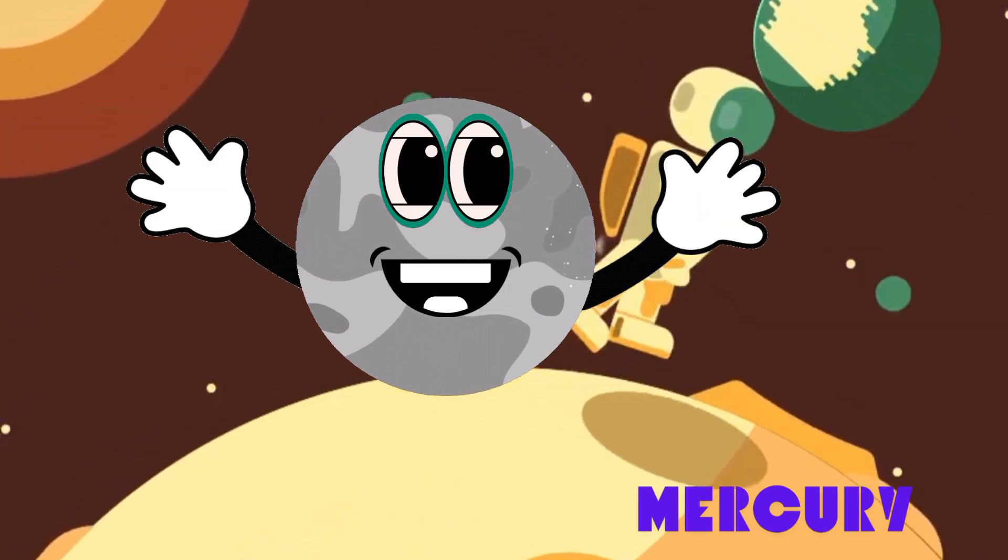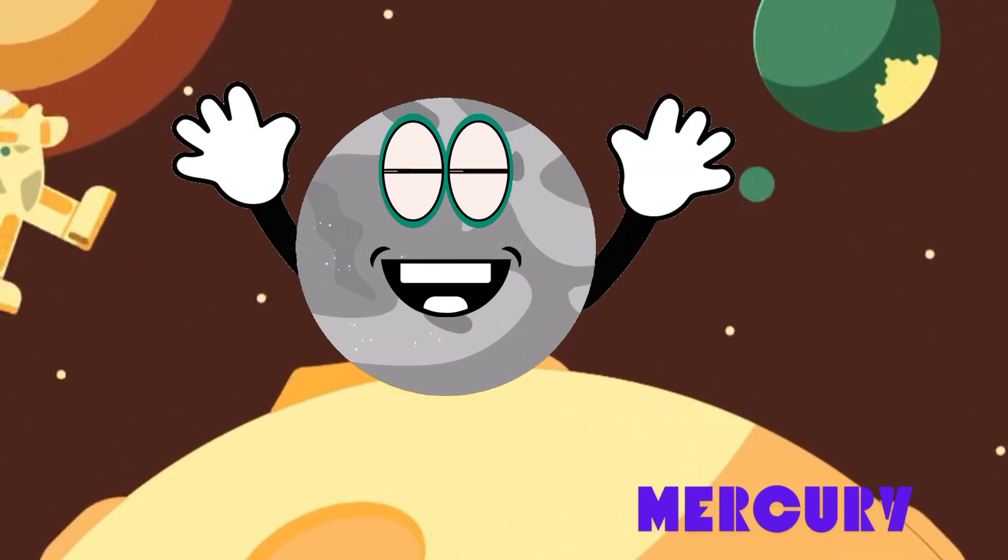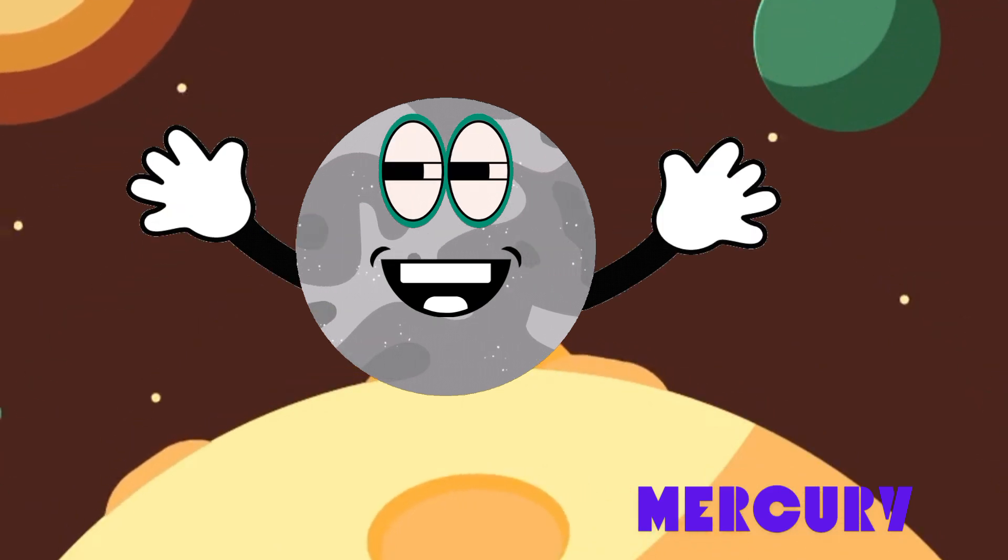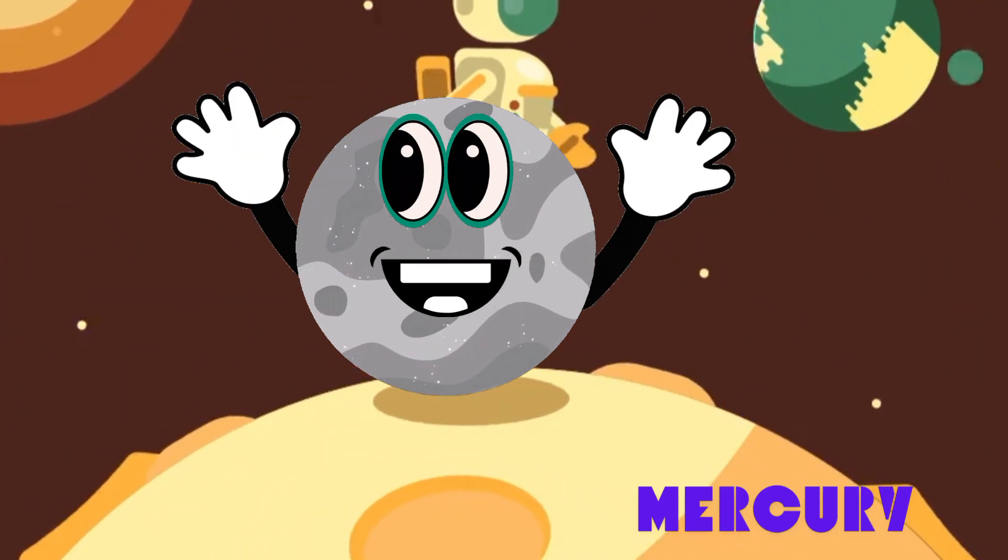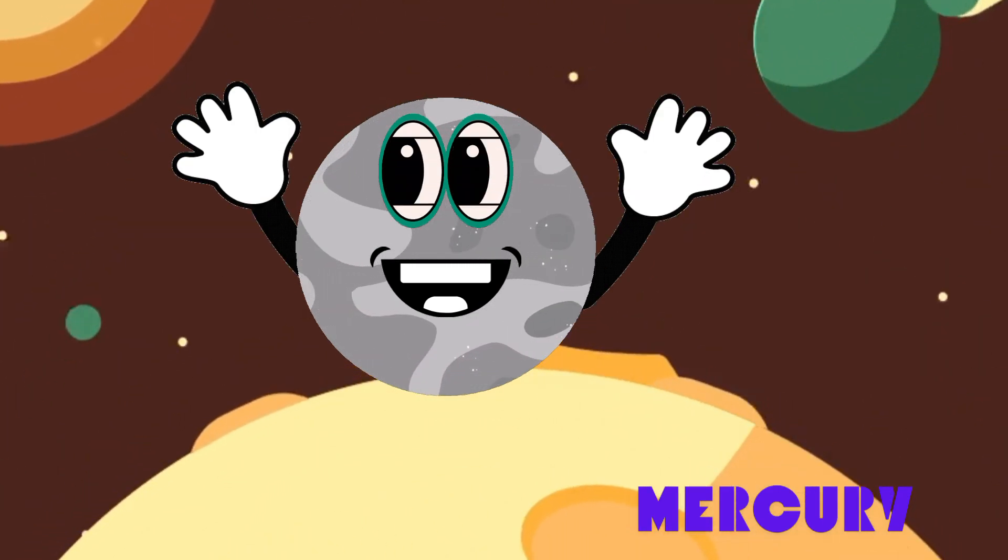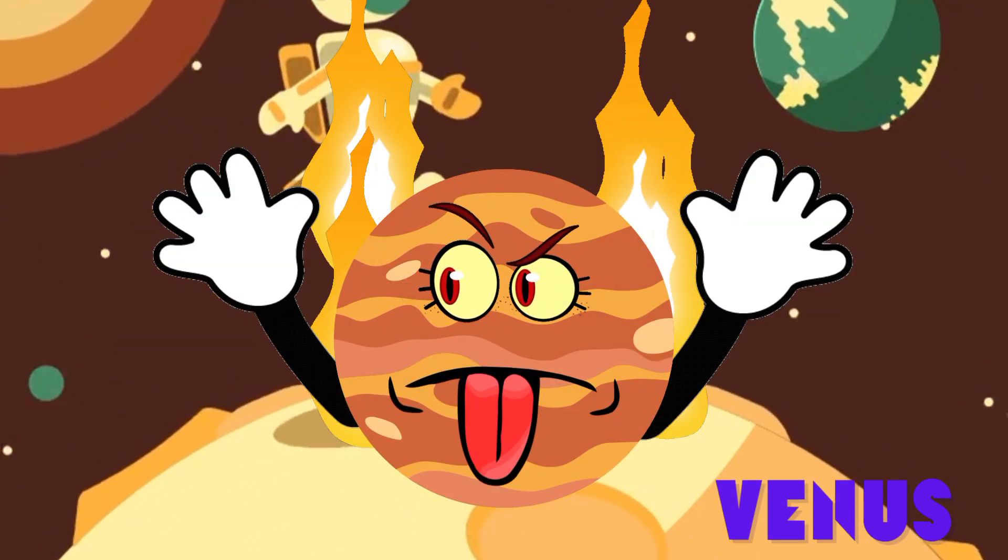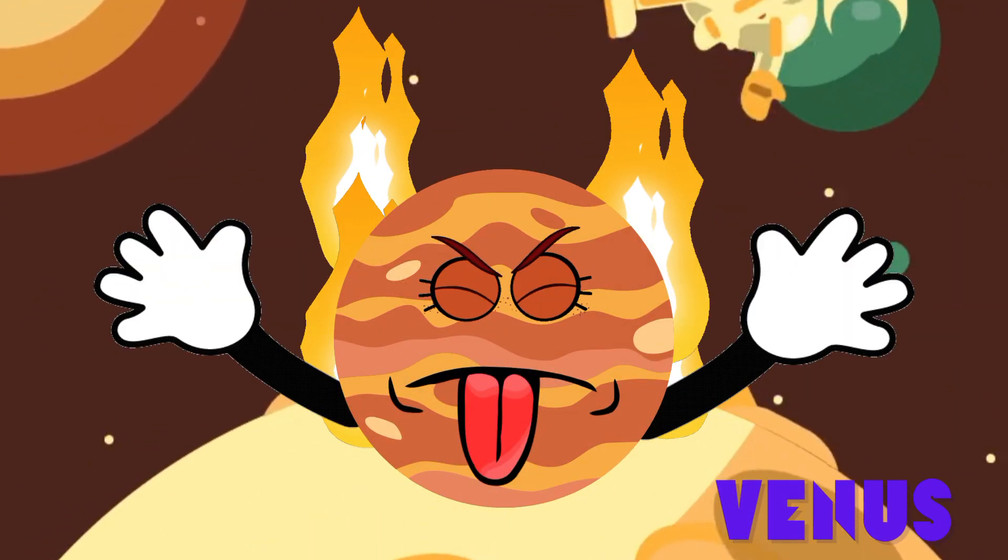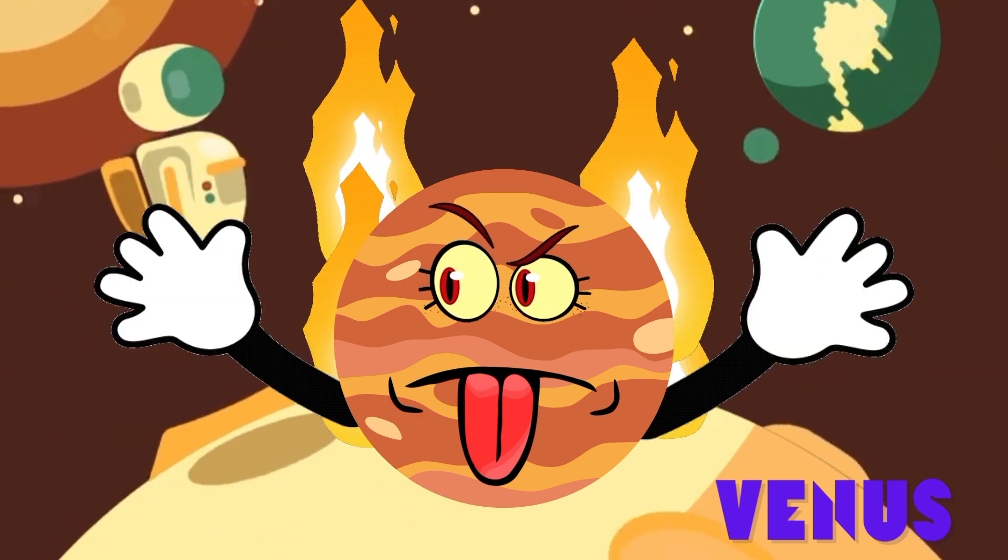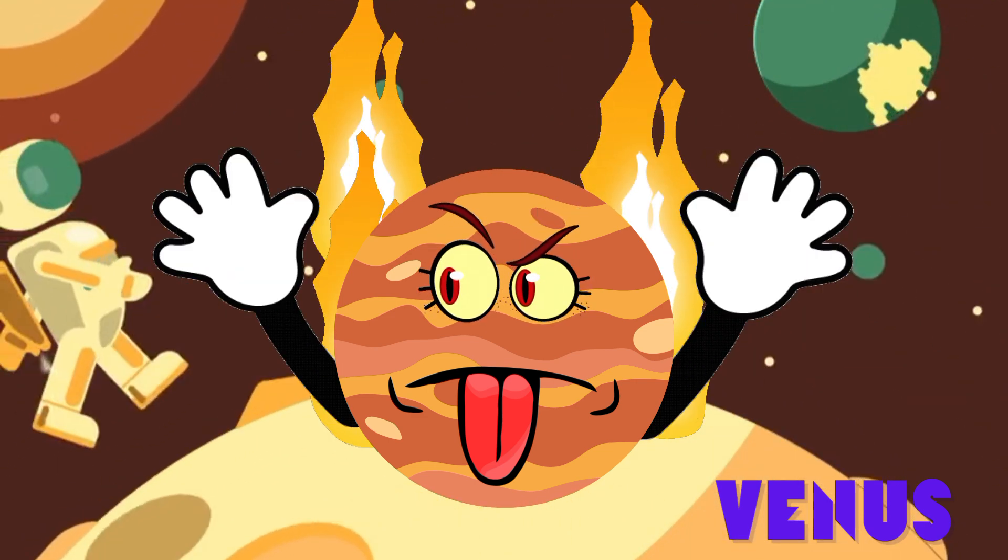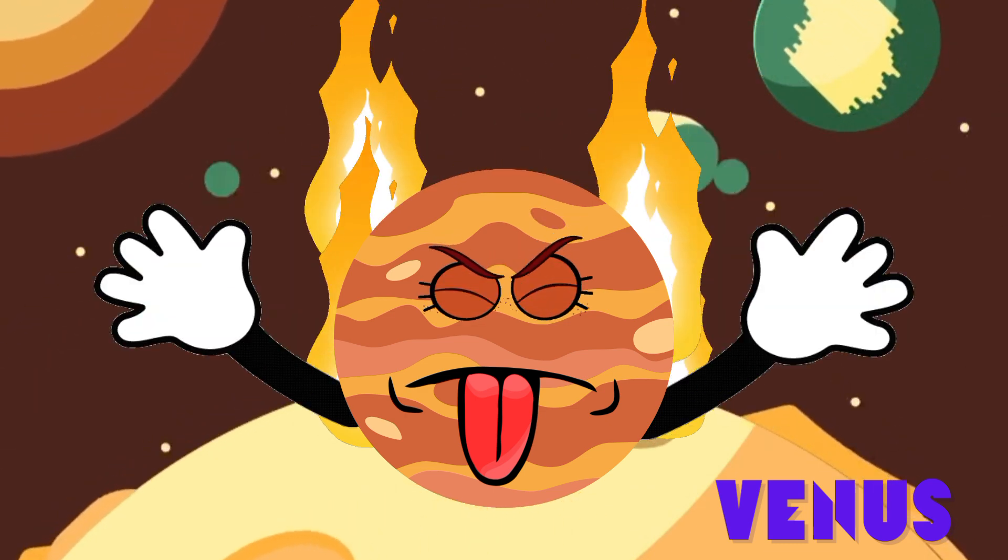Mercury is the smallest, it's tiny and hot. Closest to the sun, it sure spills a lot. Venus is bigger, but not the biggest wall. It's fiery and bright, second planet of all.